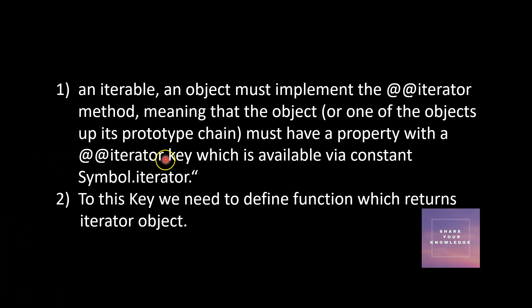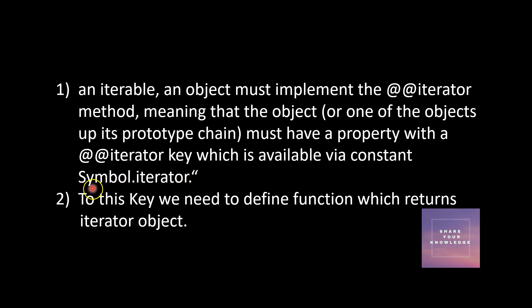The first condition is the iterable object should have the iterator key set. You can get this key through Symbol.iterator. With the introduction of Symbol, you can get this unique value using Symbol.iterator.